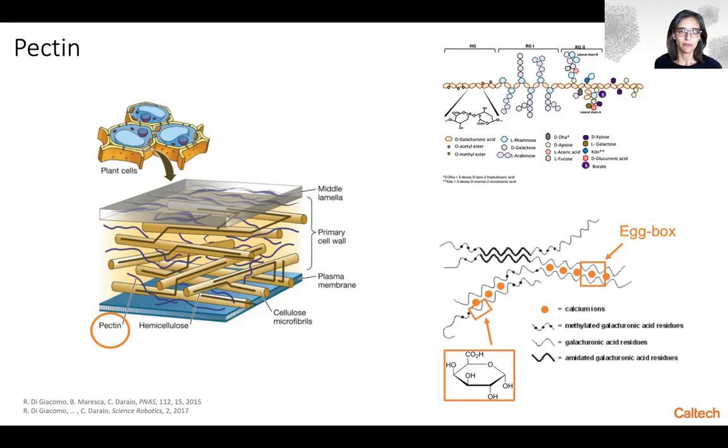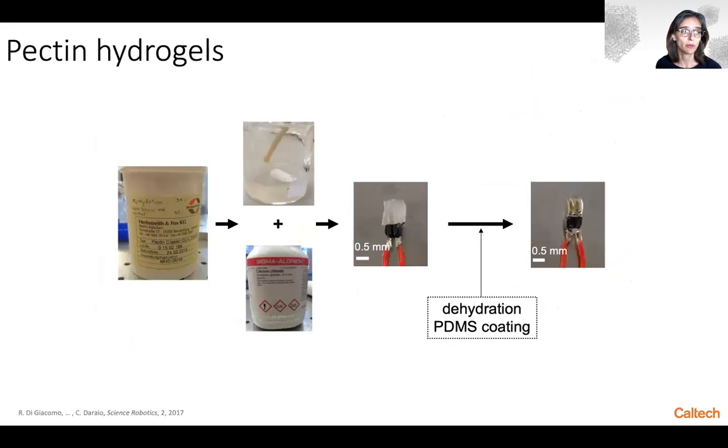When we identified pectin to be the molecule responsible for temperature sensitivity, we proceeded in testing pure pectin and pectin hydrogel as the active principle for temperature responsivity. We tried to create a thermistor or thermometer just using pectin hydrogels composed by pectin bought commercially and cross-linked by calcium chloride in water, dehydrated, and coated with a layer of PDMS to prevent the influence of environmental humidity.